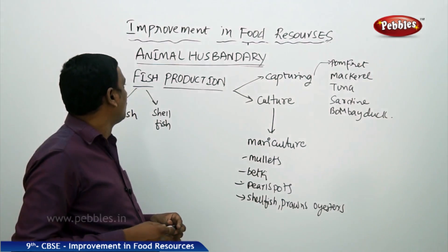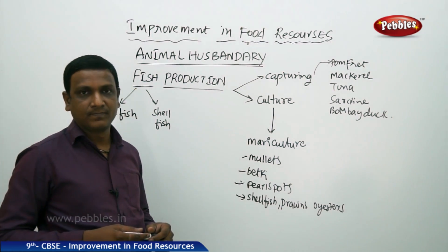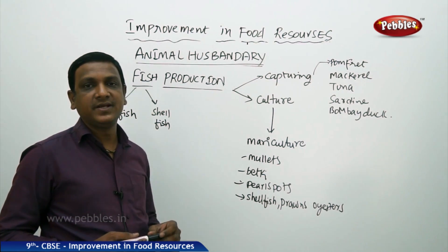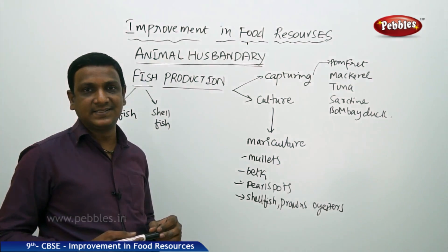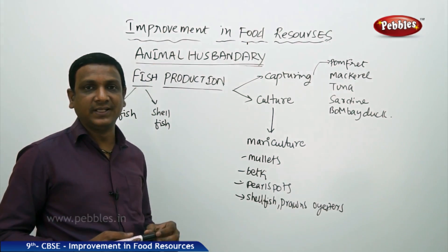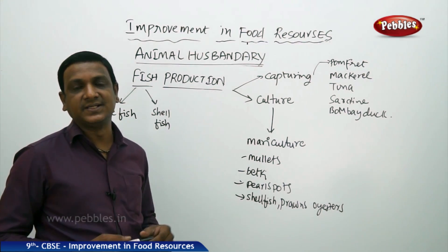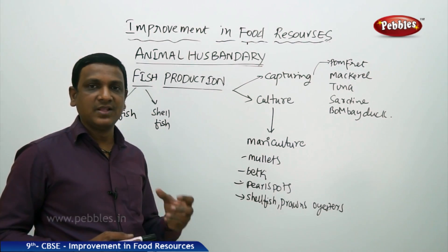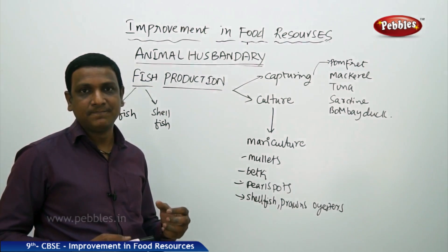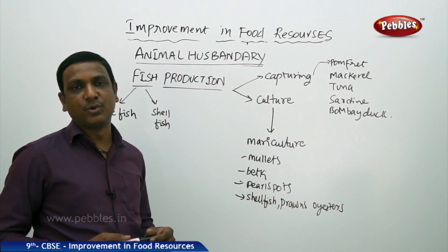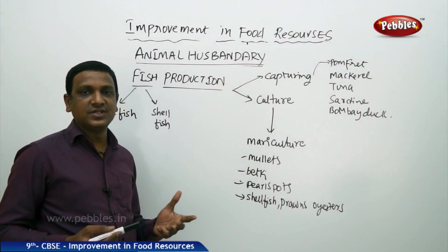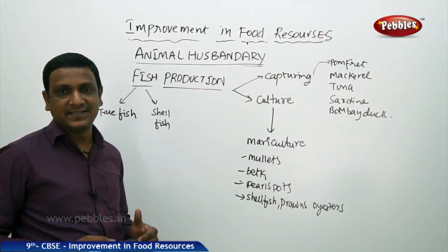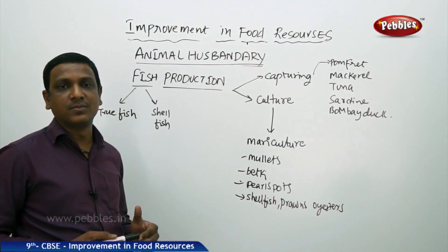Now let us see fish production. Fish is another food resource rich in protein and essential fatty acids, which are very important for the human body's immunity, growth, and maintenance. It is cheap compared to other protein sources, so even poor people can afford to buy fish and get good protein in their diet. Fishes are found in ponds, lakes, rivers, and other freshwater bodies.